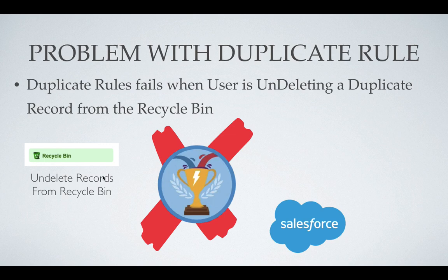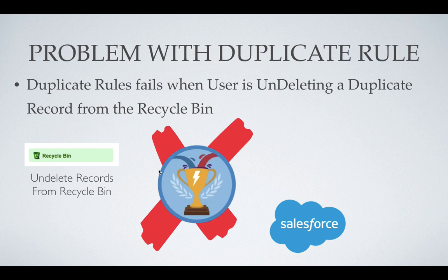The problem with duplicate rules is: if a user is trying to undelete a duplicate record from the recycle bin, the duplicate rule doesn't work. Let's say you had a duplicate record, you deleted it, and now the user goes to the recycle bin and tries to undelete that record — at that point the duplicate rule will not work, and we will again see duplicate records in our system.